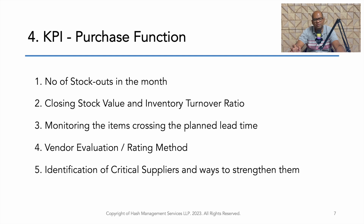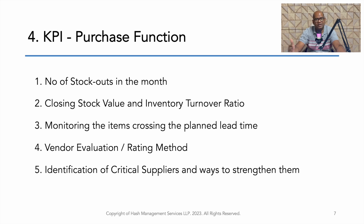For the purchase department, KPIs can be number of stockouts in a month, closing stock value, and inventory turnover. Monitoring materials crossing the planned lead time is also important — the lead time in the ERP is often not revisited and can differ significantly from reality, leading to stockouts. We suggest measuring lead time at least every six months for critical items and adjusting the ERP accordingly. Lead time is measured from when the purchase order is raised to when the GRN is completed. Vendor evaluation and vendor rating — whether the purchase department is identifying and strengthening critical suppliers — are also good KPIs.